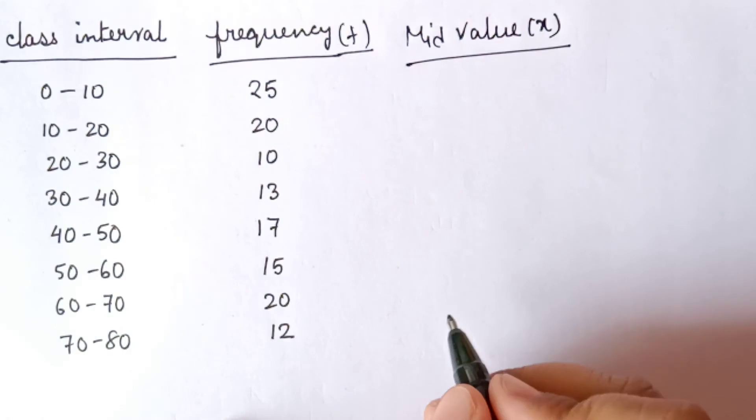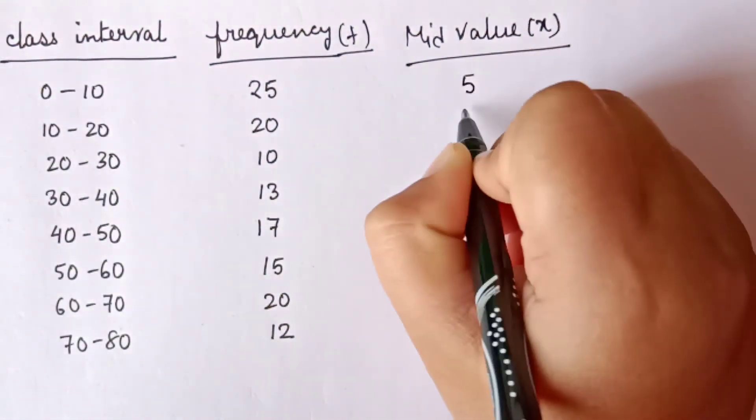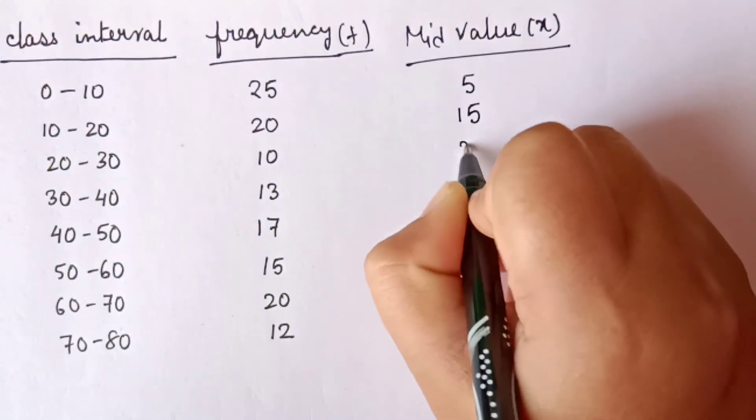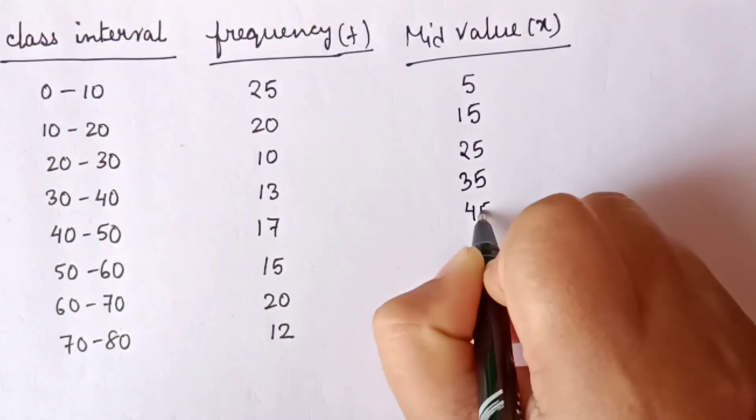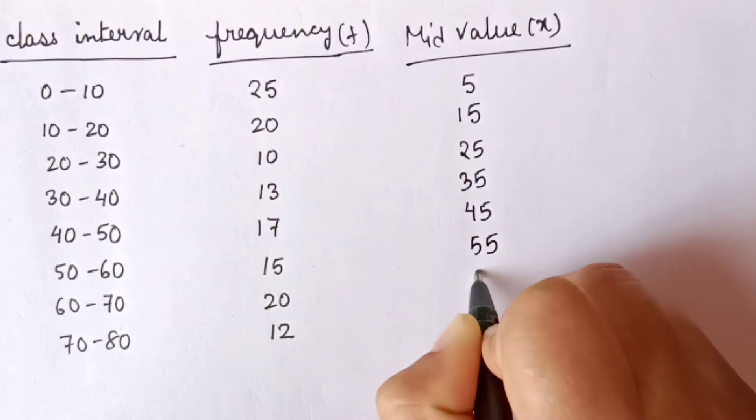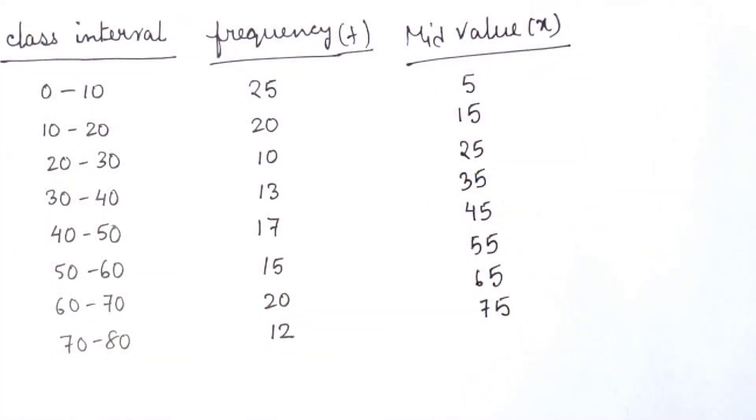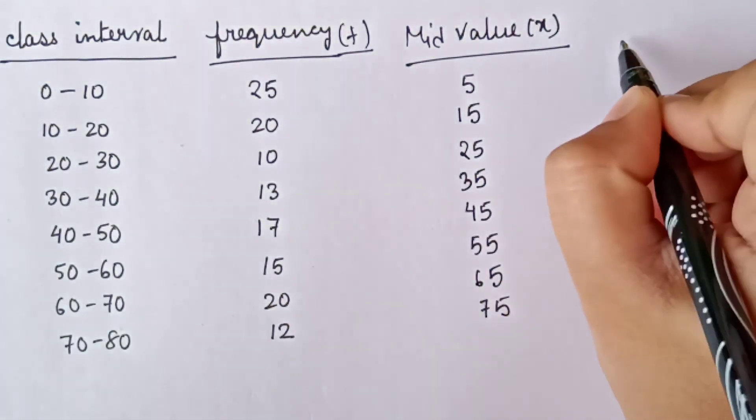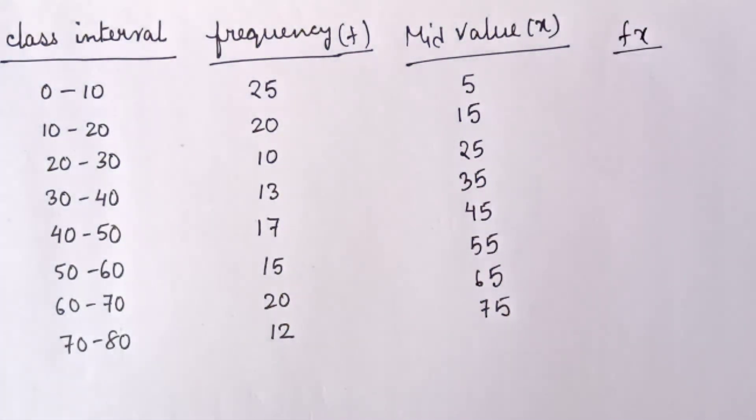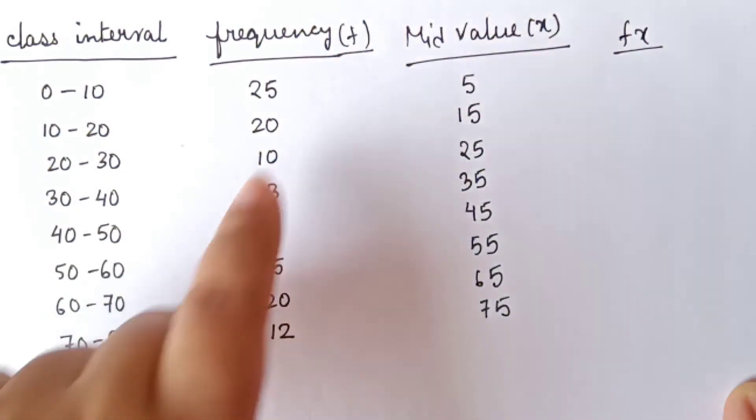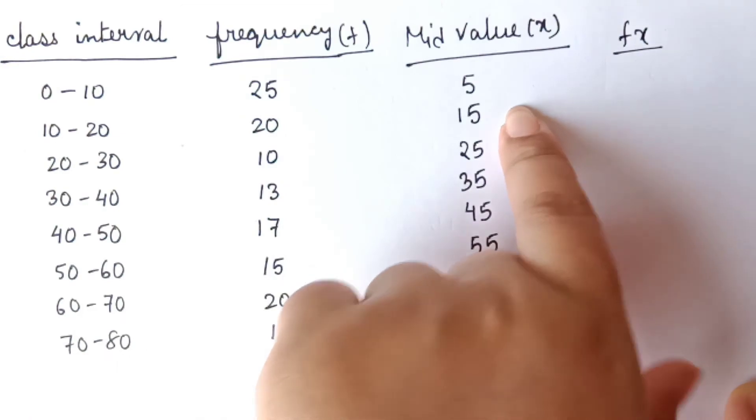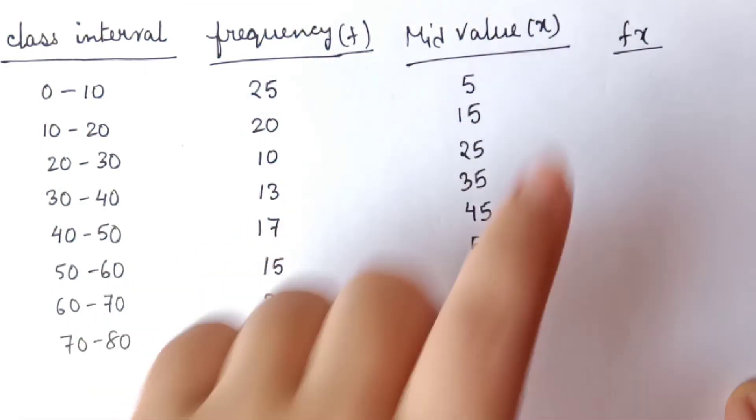Mid value will be denoted by X. The mid value of 0 and 10 is 5. Accordingly, all the values are 15, 25, 35, 45, 55, 65, 75. Then we need to find out the column FX. FX means it is the product of the corresponding values of the frequency F and the mid value X.